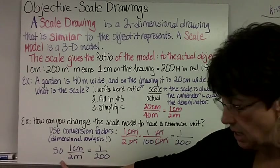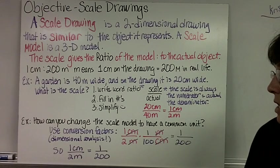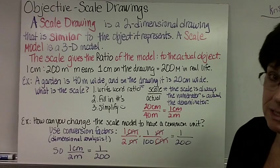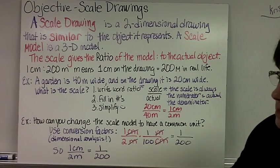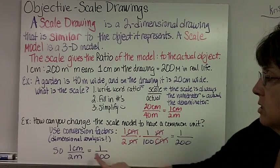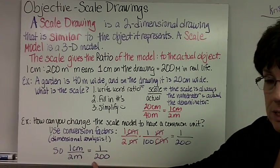So the scale of 1 centimeter to 2 meters can also be written as 1 to 200. We're talking about centimeters, but we've crossed it out because it's the same thing. It would tell you in the problem, but I just wanted to show you how to convert it so it has the same unit.